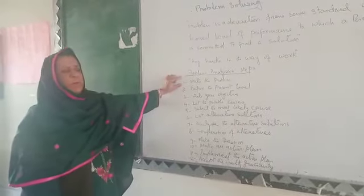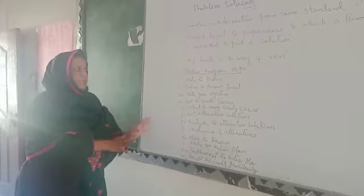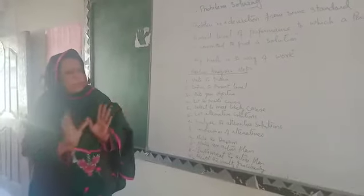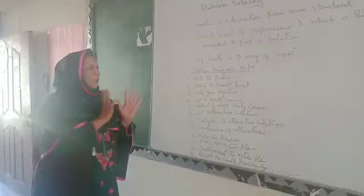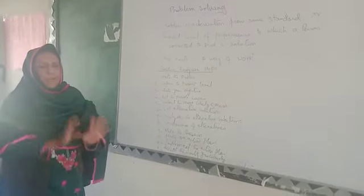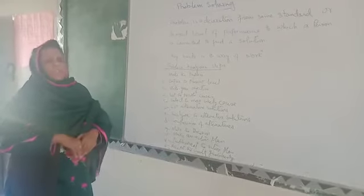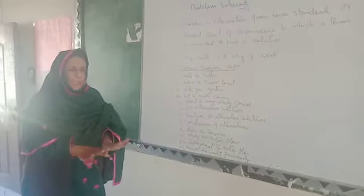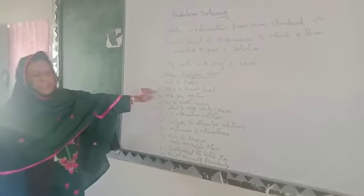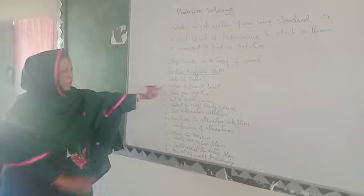First, we have to state the problem very clearly in understandable terms. Unless we clearly explain the problem, it will not be possible to find out the causes and solution for that particular problem. Then we have to find out the present level of the problem — how big or small it is at the present level. After defining the present level, we will find out better solutions for that particular problem.